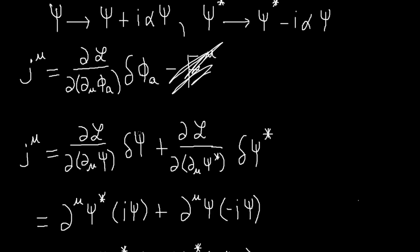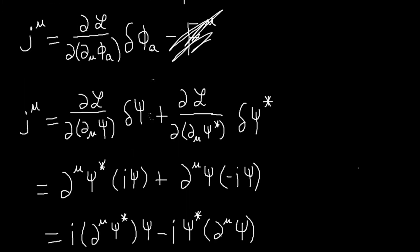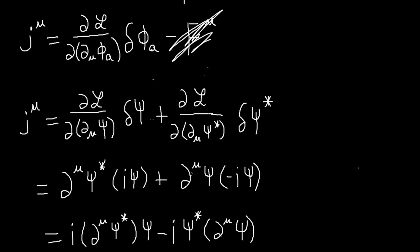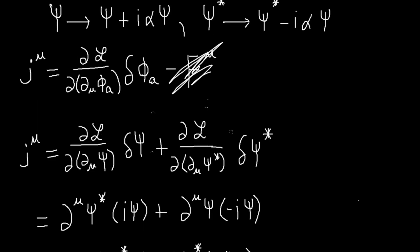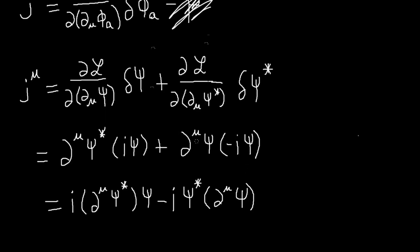And the variation in psi we can pick out from here where we leave off the infinitesimal parameter part. We just take out what's left over. So that's i psi. So delta psi is i psi. And then similarly, when we do this derivative, we get d mu psi. And for the variation in psi star, it's minus i psi this time. And so our conserved current will be this.